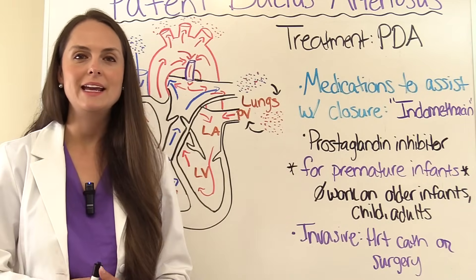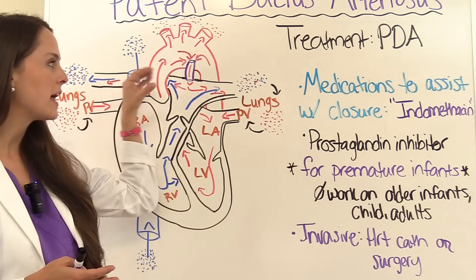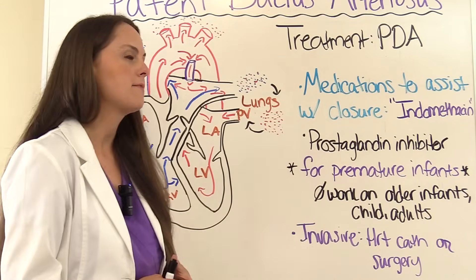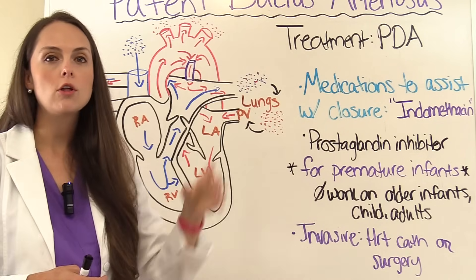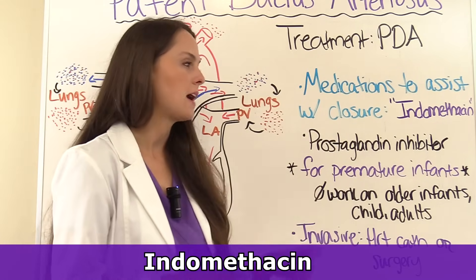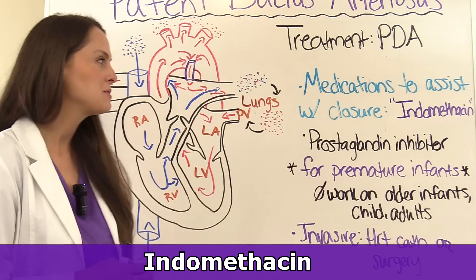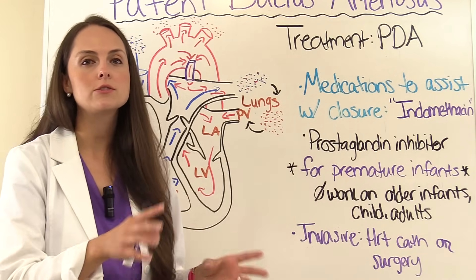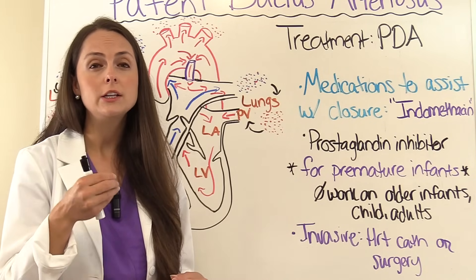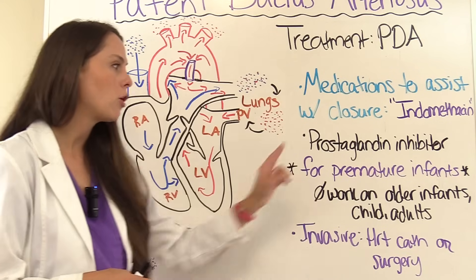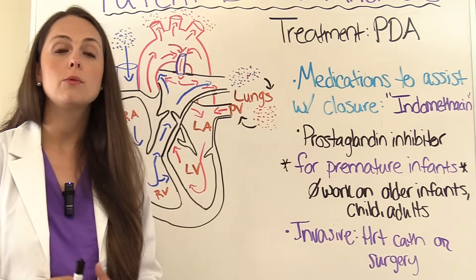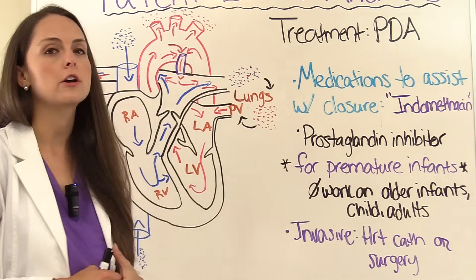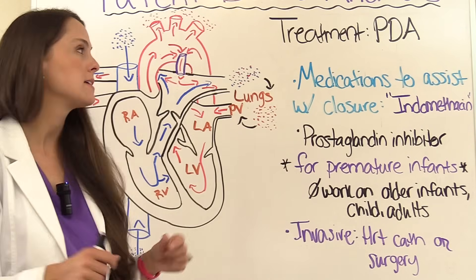For treatment of PDAs, a medication can be given to cause the vessel to clamp off and close. The medication used is indomethacin, a prostaglandin inhibitor — remember PDA and indomethacin together. It's usually only successful in premature infants or very young infants who are a few days old; it won't work for older infants, children, or adults. Another treatment is a heart catheterization, where a catheter is inserted through a blood vessel and a device is placed to close the structure. Surgery is also an option where the vessel is tied off.